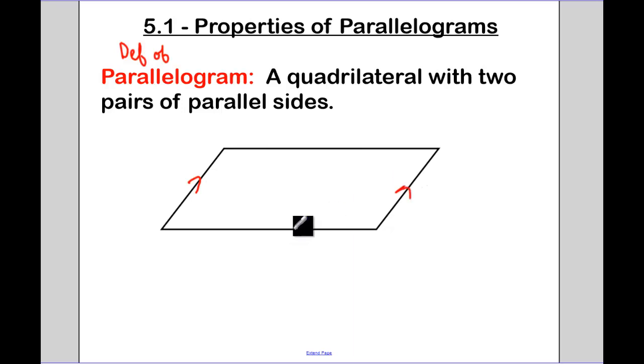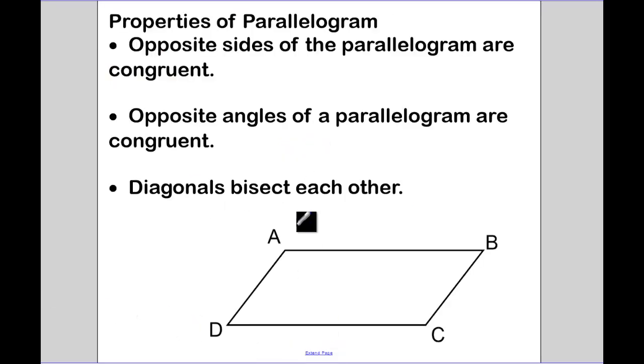So the two opposite sides are going to be parallel. Some properties of parallelograms: if it's a parallelogram, parallelogram gives us opposite sides congruent. So this is going to be our reason in a proof. A parallelogram gives us opposite angles congruent.